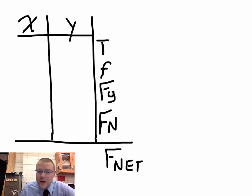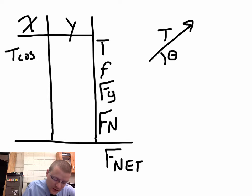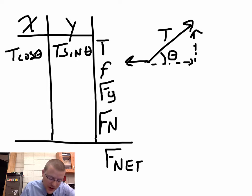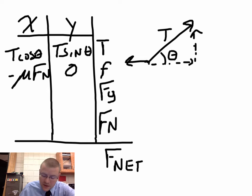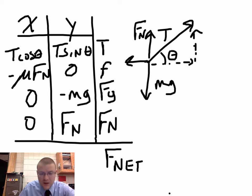Looking at the four forces we had on that sled, we have our tension. Our tension was up at an angle. So that tension is in the x and y direction. So that means I've got T cosine of theta and T sine of theta in the x and y direction. Looking at friction. Friction was straight backwards. So back in the x direction was minus mu fn. No frictional force in the y direction. Gravity was straight down at negative mg. And the normal force was straight up. So normal force in the y direction. No force in the x. So we've broken all our forces into their pieces now.